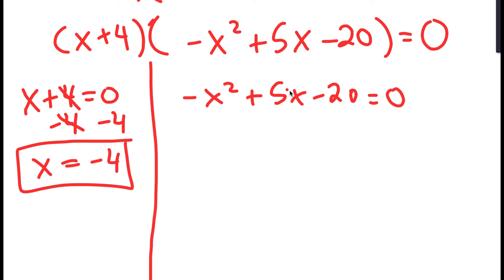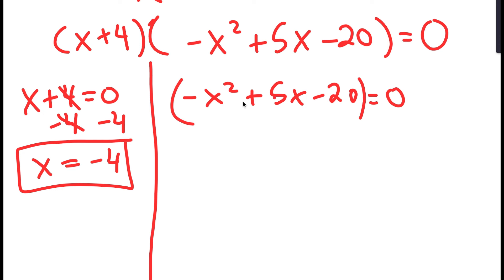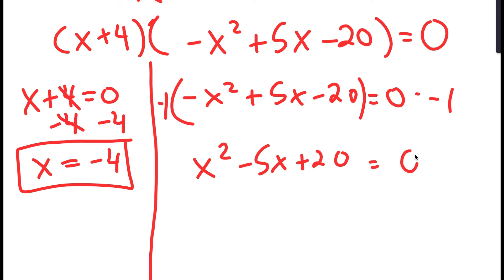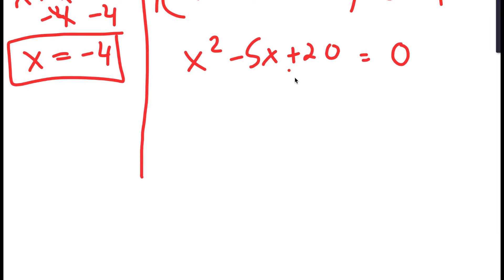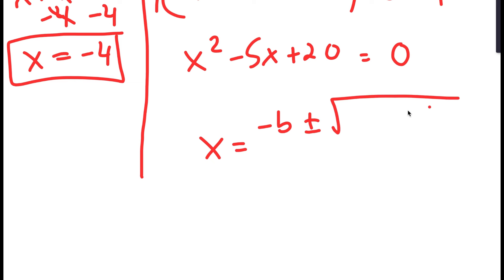For negative x squared plus 5x minus 20 equals 0, I'm going to get rid of the negative sign in front of x squared by multiplying both sides by negative 1. So I get x squared minus 5x plus 20 equals 0. To solve this, I'm going to use the quadratic formula: negative b plus or minus the square root of b squared minus 4ac, all over 2a.